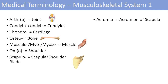The next one is acromio, which just denotes the acromion of the scapula — a projection on the scapula where some muscles actually attach. The next one is axillo, which just denotes the axilla, which is just your armpit. You can think of axillary for this one.